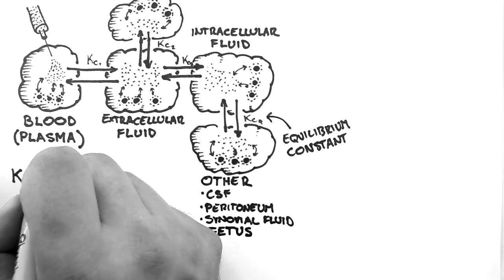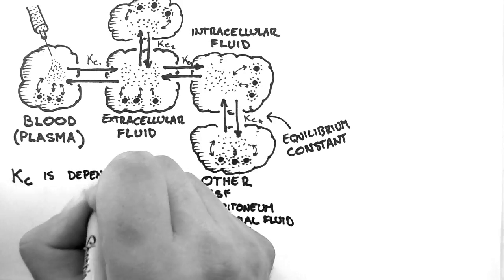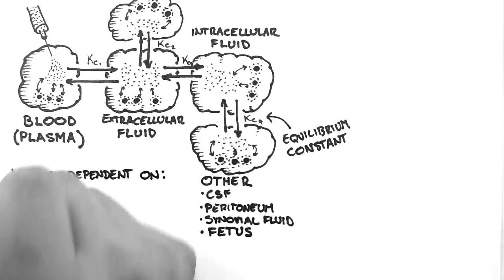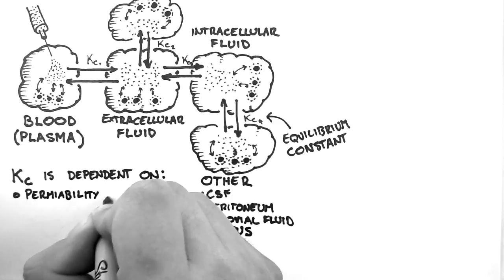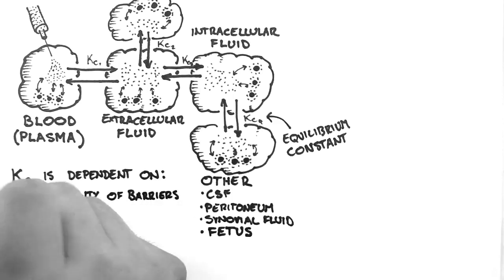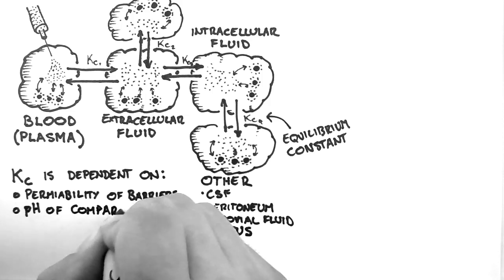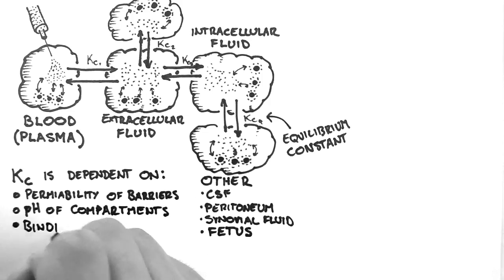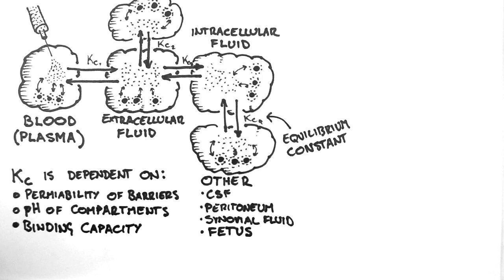Thus, I can say that the equilibrium constant is dependent on the permeability of barriers between compartments, the pH within the compartment, the binding capacity within the compartment, and numerous other factors such as the fat solubility of the drug, which is especially important for those moving into the fat compartment.